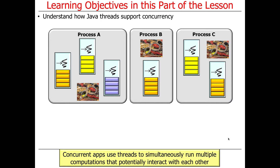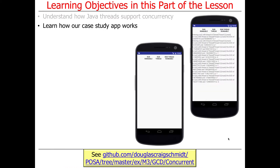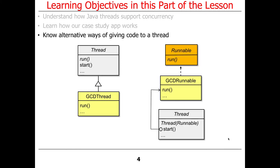We're going to talk about how Java threads can be used to support concurrency. Concurrent apps are going to use threads in order to simultaneously run multiple computations that potentially interact with each other. If they don't interact with each other, then the program is embarrassingly parallel. If they do interact with each other, that leads to a whole bunch of other things we'll talk about later about synchronization and avoiding various concurrency hazards. We'll also begin to talk about a case study app, which is a concurrent greatest common divisor app, which you can download and play with in Android. It demonstrates a bunch of different ways to run threads and give threads work to do.